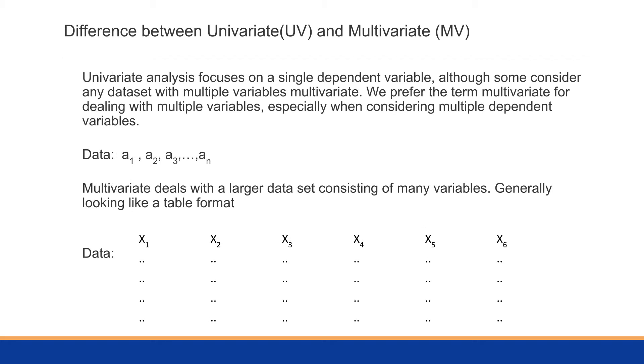The difference between univariate and multivariate is pretty straightforward. Univariate focuses on a single dependent variable. Some do consider any dataset with multiple variables as multivariate, but here in this course we're going to prefer the term multivariate as dealing with multiple variables, especially when considering multiple dependent variables.